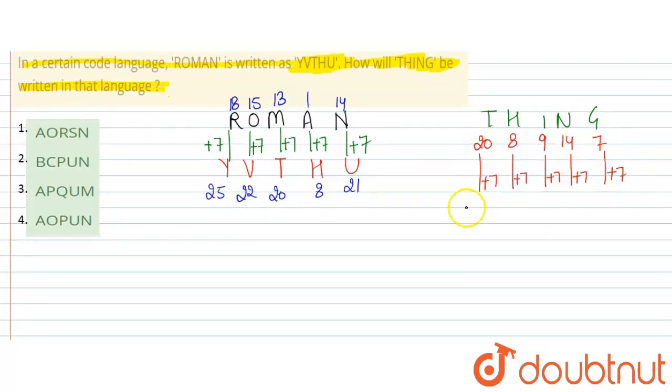For THING: T is 20, so 20 plus 7 is 27. H is 8, so 8 plus 7 is 15. I is 9, so 9 plus 7 is 16. N is 14, so 14 plus 7 is 21. G is 7, so 7 plus 7 is 14.